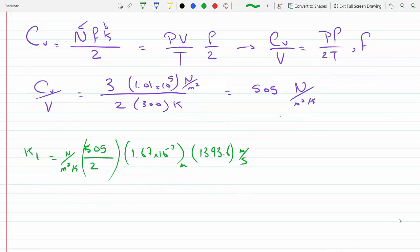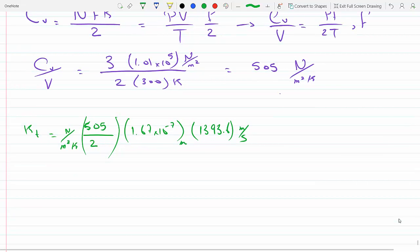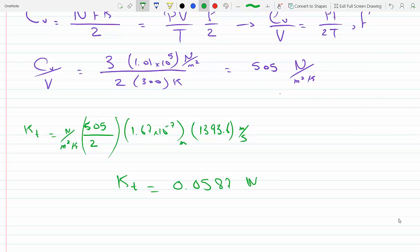Okay, plugging all this stuff in: 0.0587. And if you work out these units, you will come to watts per meter Kelvin for the thermal conductivity.